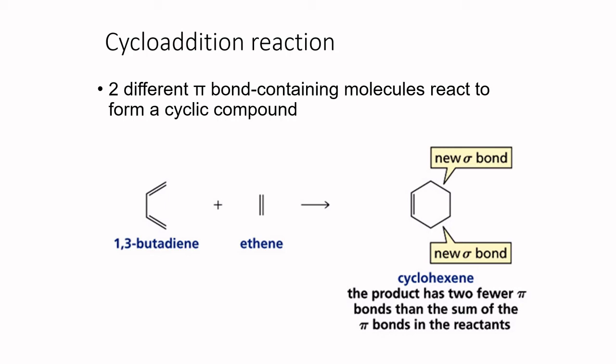In this video we will discuss another important pericyclic reaction, which is cycloaddition. In a cycloaddition reaction, two different pi-bond-containing molecules react to form a cyclic compound. The difference between cycloaddition and electrocyclic reactions is that cycloaddition requires two starting materials. For example, 1,3-butadiene reacts with ethylene to form cyclohexene.